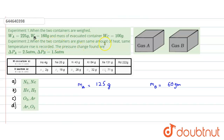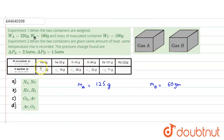When the two containers are given the same amount of heat, the same temperature rise is recorded in both. However, the pressure changes — the pressure in container A is observed to be 2.5 atmospheres and in container B it is 1.5 atmospheres. We need to identify the gases. Container A could be helium, neon, argon, krypton, xenon, or radon, while container B could be H₂, F₂, N₂, O₂, or Cl₂ — essentially monoatomic versus diatomic gases.